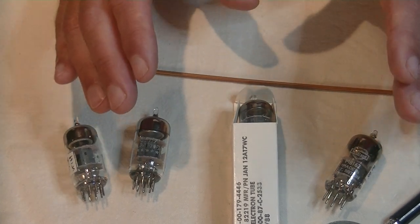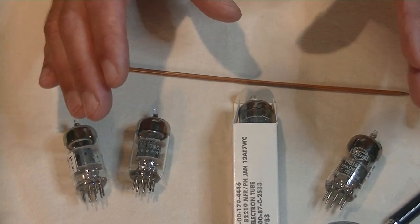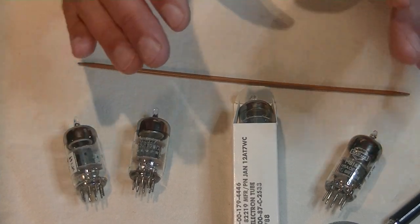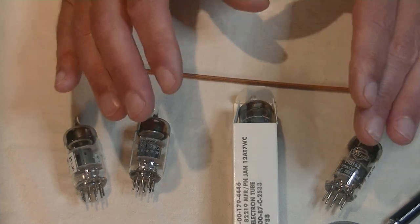In many cases, you can safely substitute a 12AT7 for a 12AX7. Same pinout, same heater voltage, but with a lower gain.